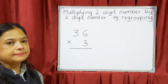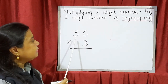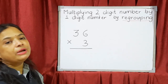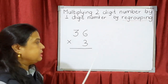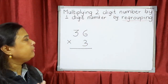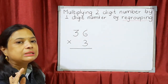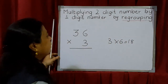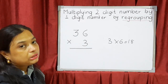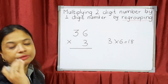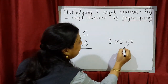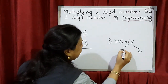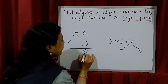So the answer is 72. Now let's see another sum: 36 multiplied by 3. We are going to say the table of 3. So 3 sixes are 18. Directly, 3 × 6 is 18. Now this 18 is a two-digit number, so we have to regroup. We can't write both digits in the ones column. So 8 goes in the ones column and 1 goes in the tens column.